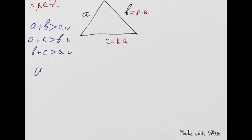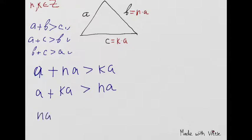A plus NA has to be more than KA. A plus KA more than NA. And the last one, NA plus KA more than A. Instead of the given three inequalities we wrote.